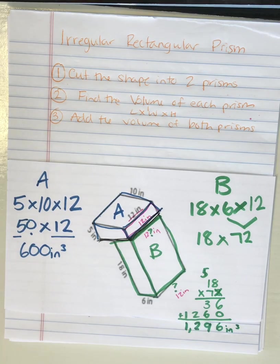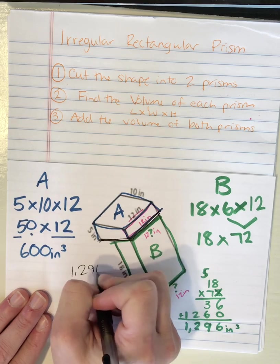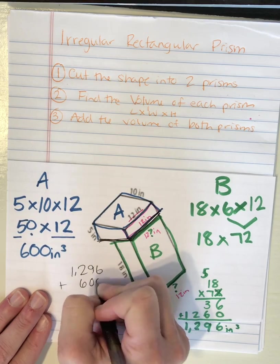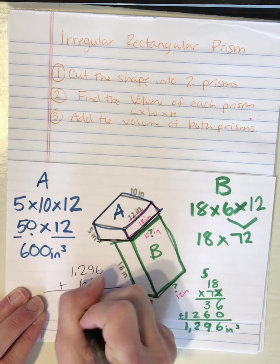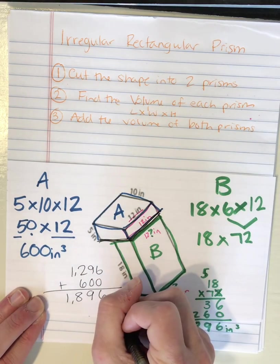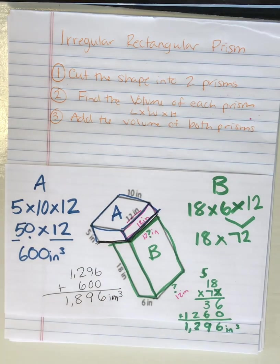So now I'm ready for step 3 where I add the volume of both shapes for my total answer. 1,896 inches cubed or cubic inches. So that is the volume of this irregular rectangular prism.